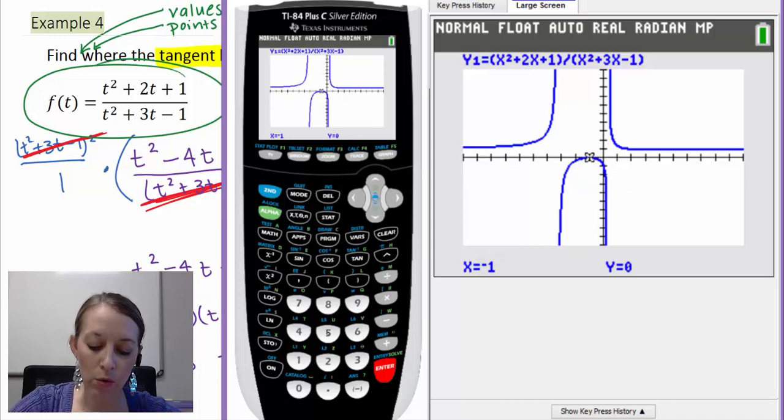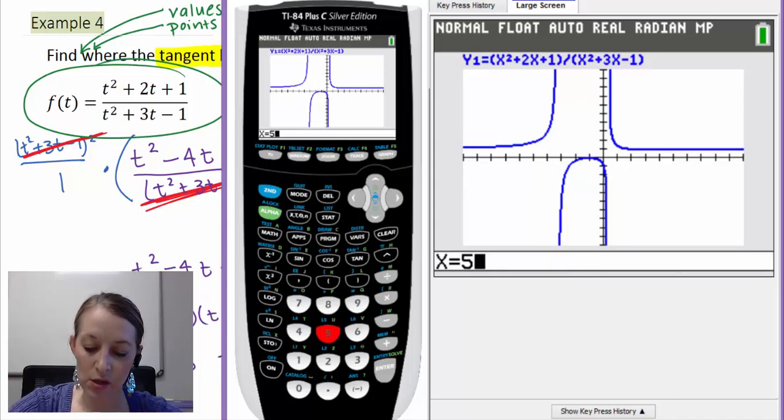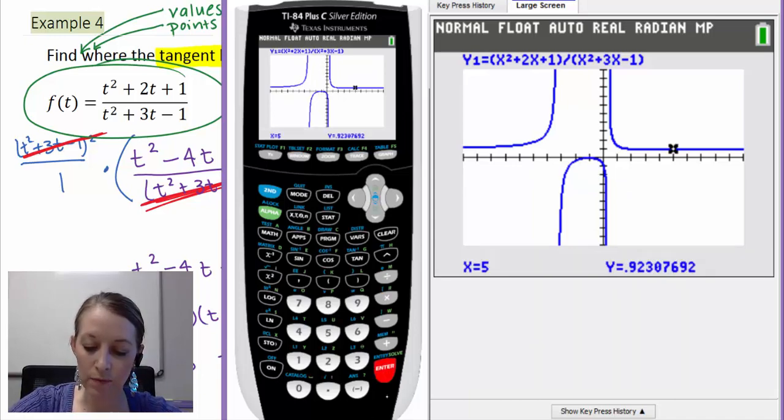What about the other one? What about when we substitute 5 in? So if we hit 5 and enter, we get this decimal approximation here. Now that's the same decimal approximation as 12 over 13. And if you don't believe me, go ahead and check it by yourself. But does this look like a horizontal tangent line?